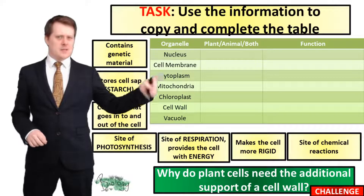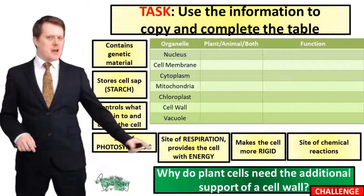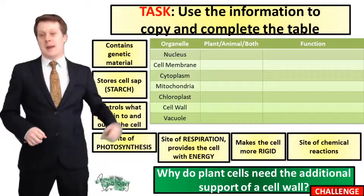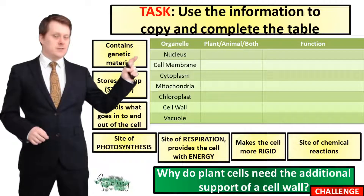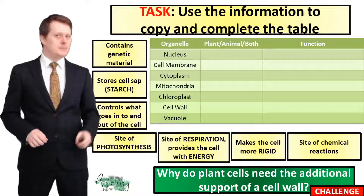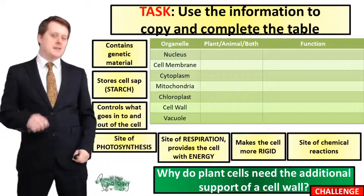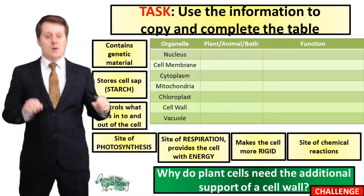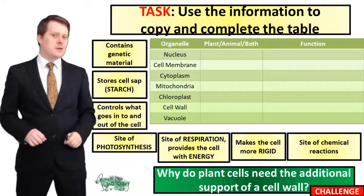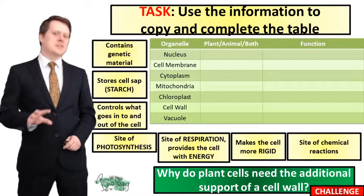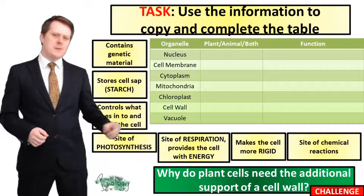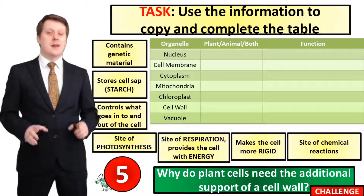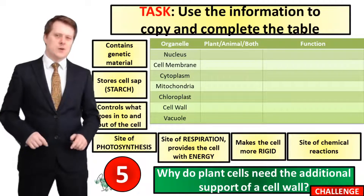For your next task I would like you to copy this table and complete it using the information around the outside. Our table has three columns with the headings: organelle, plant/animal/both, and function — and the function column is going to need to be your biggest column. The table goes down eight lines and for each one of these organelles I would like you to say whether it is in the plant cell, the animal cell, or both, and then put one of these functions next to that organelle. And if you still want a challenge, I'd also like to know why do plant cells need the additional support of a cell wall. I'm going to put five seconds on the clock and if you need more time pause the video.